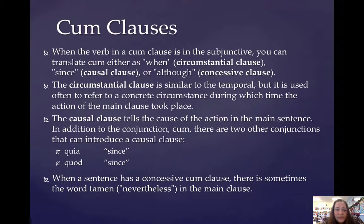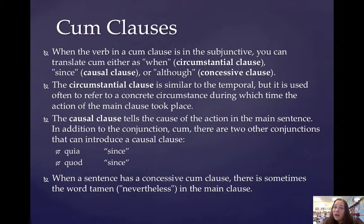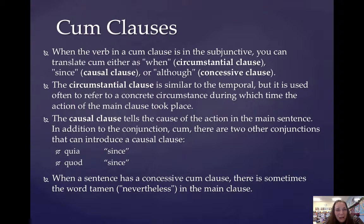The causal clause tells you the cause of the action in the main clause. When you have cum as a causal clause, you translate cum as 'since.' There are also other conjunctions that can set up a causal clause, including quod and quia, both of which translate 'since.' The last type of cum clause is called a concessive cum clause, and it translates as 'although.' Very often, though not every single time, you will have the word tamen, meaning 'nevertheless,' in the main clause — so 'although something happened, nevertheless something else happened.'